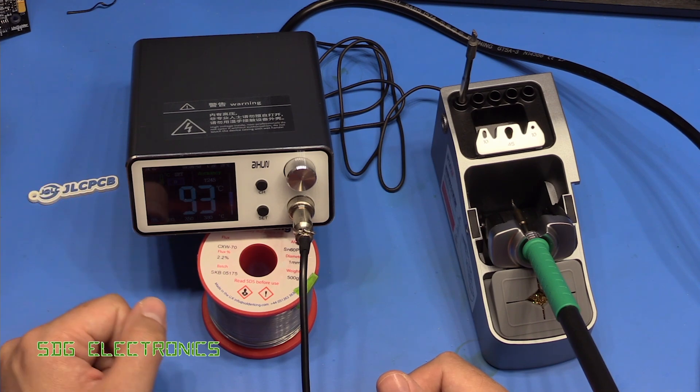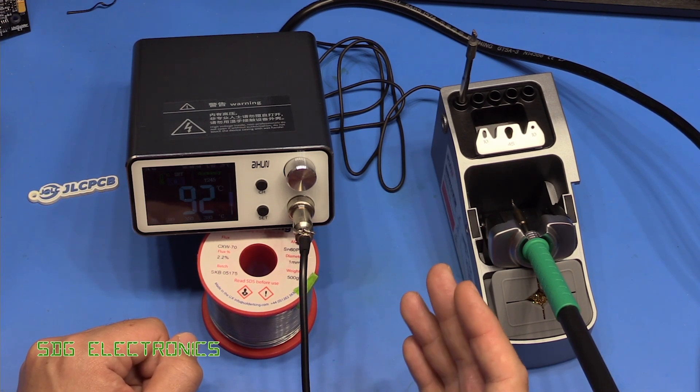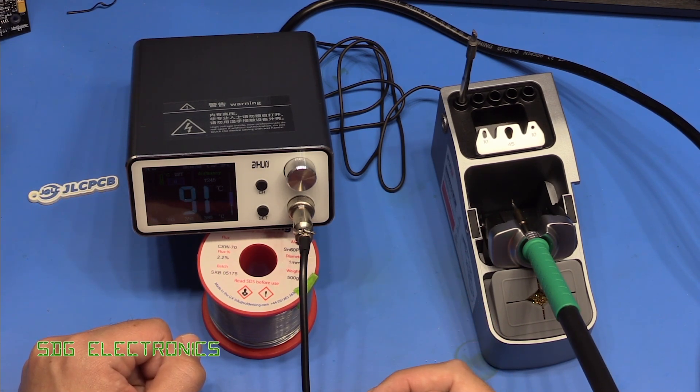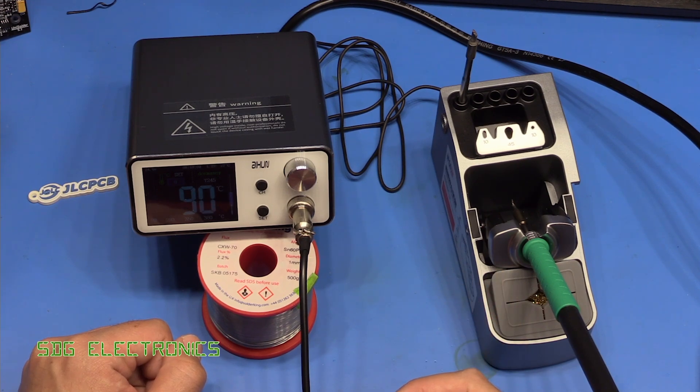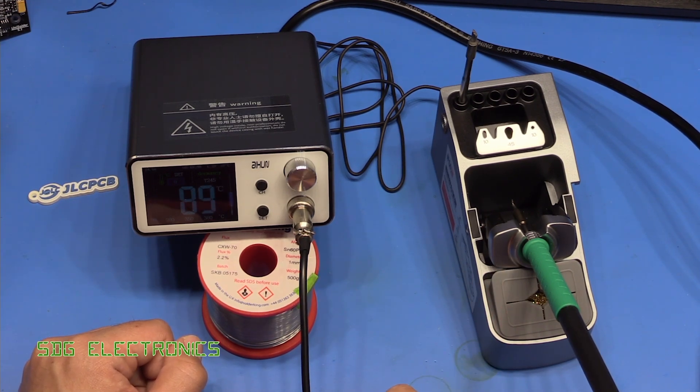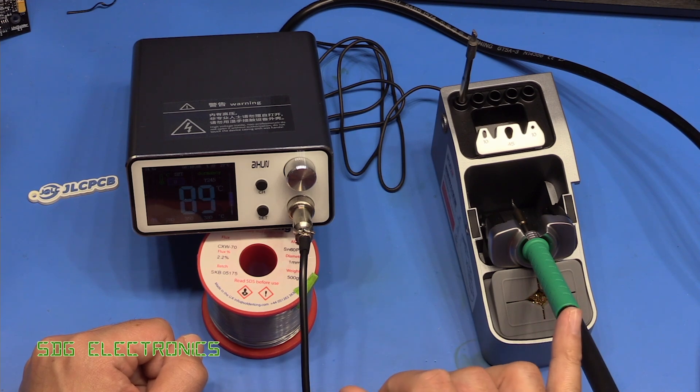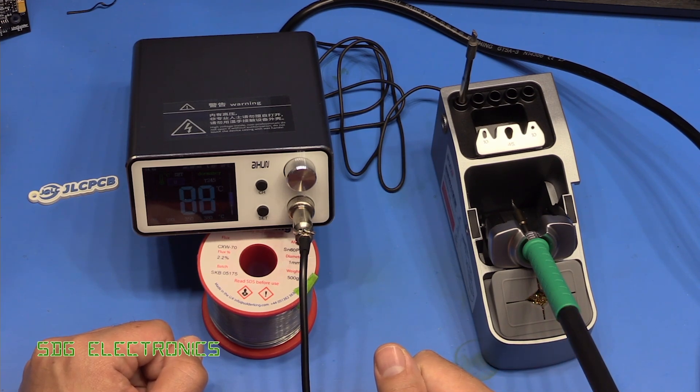Also, just in the background there, that's just reminded me, we are going to try and design a uni solder type station, but it won't be a universal soldering station. It will actually just be dedicated to JBC handpieces, because I think these are really giving us the highest performance. That should be quite an exciting design to get going as well.